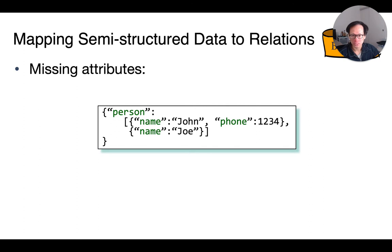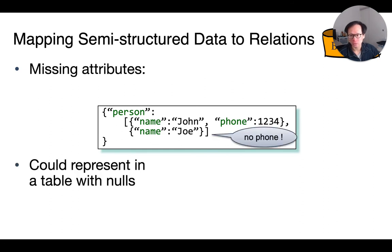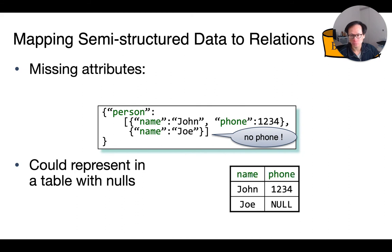So what about translating JSON documents into relations? Turns out that this is also quite straightforward, but with a few caveats. For instance, here, Joe doesn't have a phone number. So we need to represent it using nulls, like this shown here in the right.